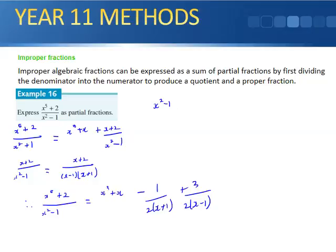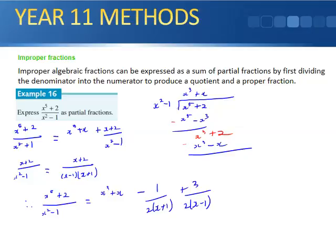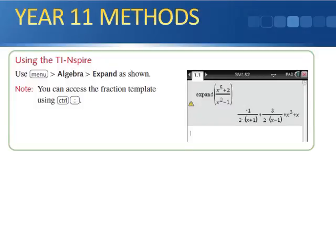Let me show the long division explicitly. Dividing x⁵ + 2 by x² - 1: x³ times (x² - 1) = x⁵ - x³, subtracting gives x³ + 2. Then x times (x² - 1) = x³ - x, subtracting gives x + 2 as the remainder. So the quotient is x³ + x with remainder x + 2. You can also verify this using the calculator's algebra expand function.